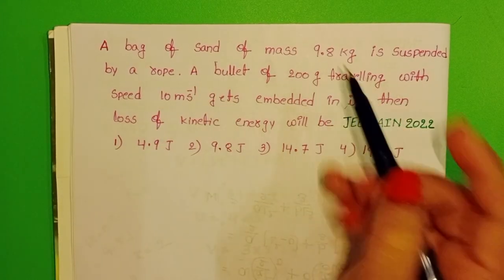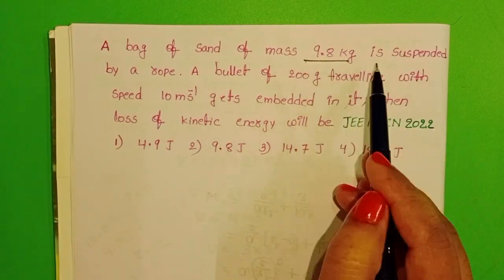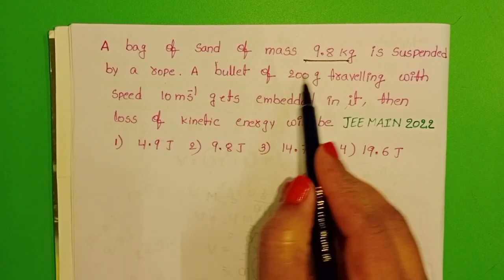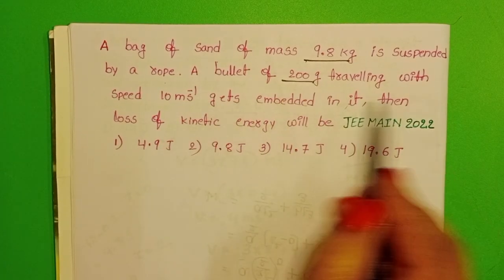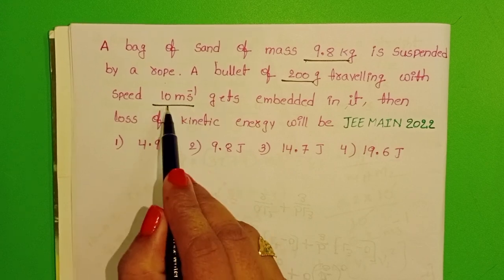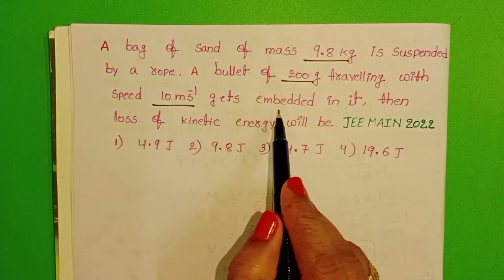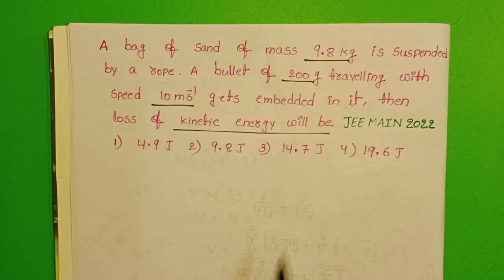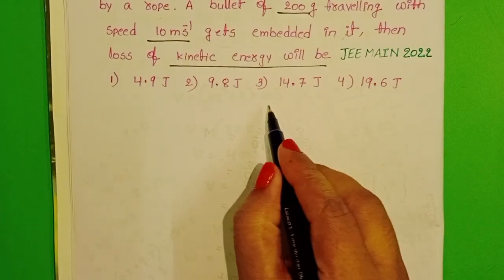A bag of sand of mass 9.8 kg is suspended by a rope. A bullet of 200 grams traveling with a speed of 10 meters per second gets embedded in it. Then loss of kinetic energy will be.